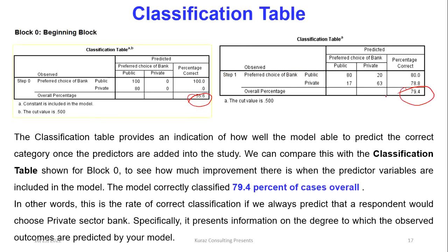The classification table provides an indication of how well the model predicts the correct category once the predictors are added. We compare this with the classification table shown in Block 0 to see how much improvement there is when the predictor variables are included. The model correctly classified 79.4% of cases overall, showing the rate of correct classification for predicting whether respondents chose private sector banks.